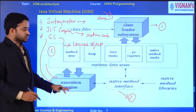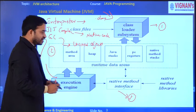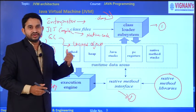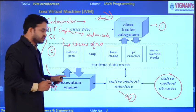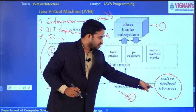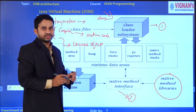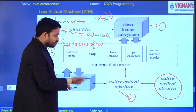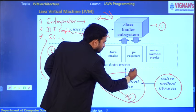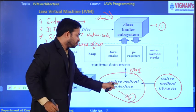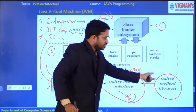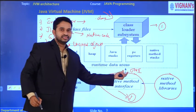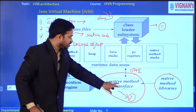While executing the .class file, we require native method libraries. These libraries are required during execution and are linked to the execution engine via an interface called JNI — Java Native Interface. With the help of JNI, the set of libraries required for execution of the .class file are provided to the JVM.